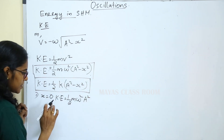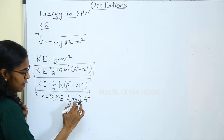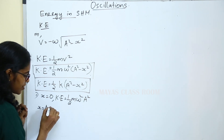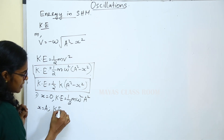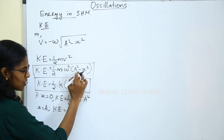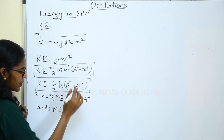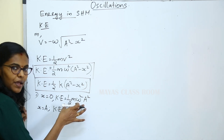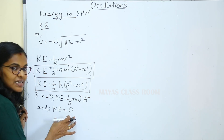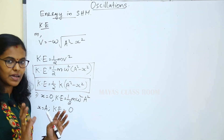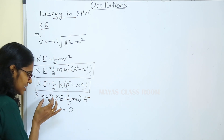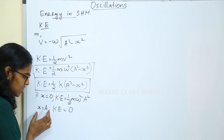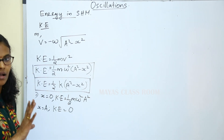If x is equal to 0 at the mean position, the kinetic energy is equal to half m omega squared into a squared, which is the maximum kinetic energy. At the extreme position, kinetic energy is minimum. Is it clear?